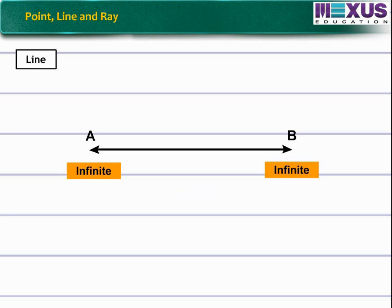The line AB is of infinite extent on both ends. It can have infinite number of points, like XYZ, PQR on it.